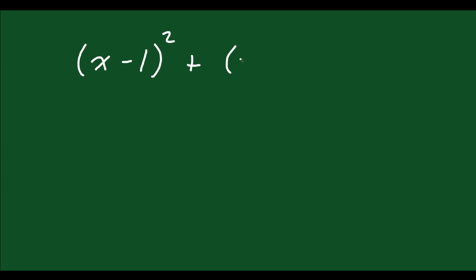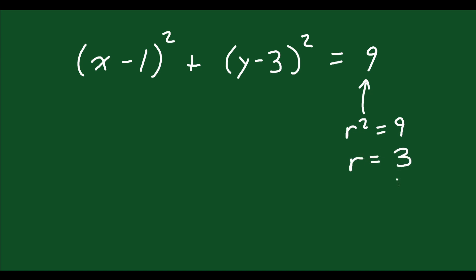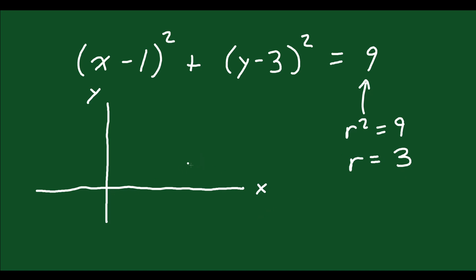Now what if we have h and k values? The last example didn't have any, but what if we have something like (x minus 1) squared plus (y minus 3) squared equals 9? Just like before, we determine the radius: r squared equals 9, so taking the square root gives radius equals 3. When we graph this, it's a circle with a radius of 3, but we have to find where the center is now. Before it was at (0, 0), but now it's moving because we have h and k values.